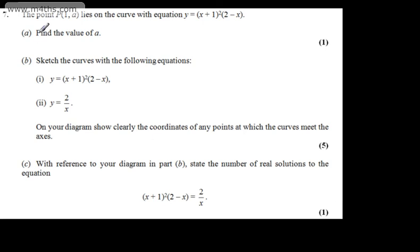This is question number 7. We're told the point P, 1 comma a, lies on the curve with equation y is equal to x plus 1 all squared multiplied by 2 minus x. In part A, for one mark, we're asked to find the value of a.